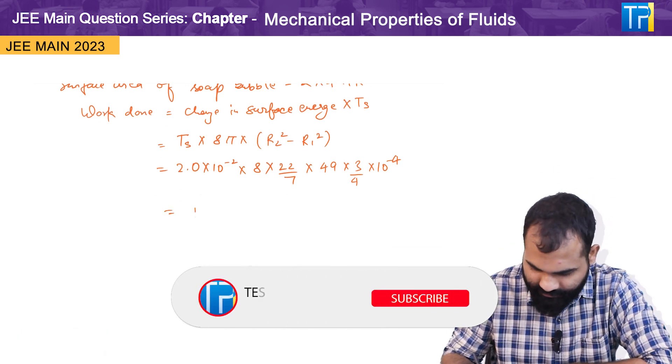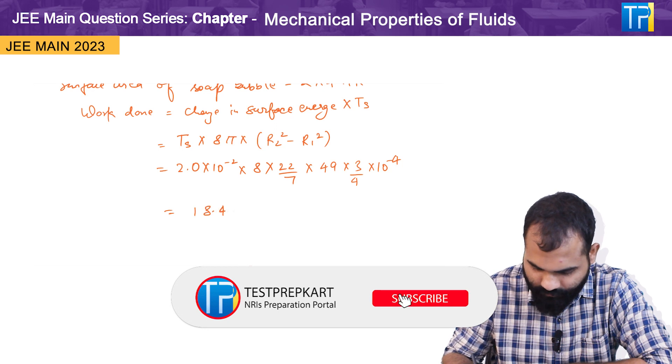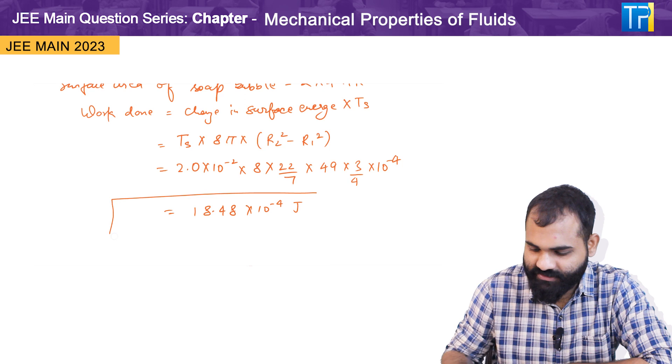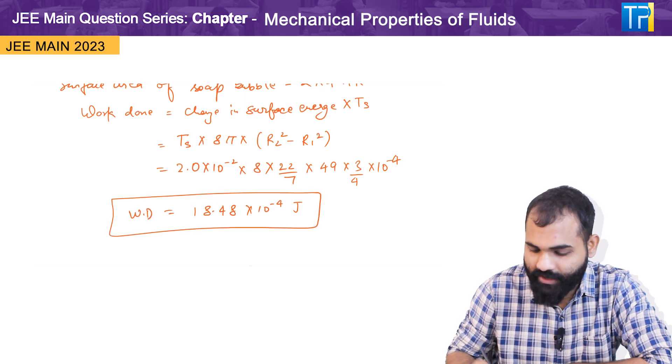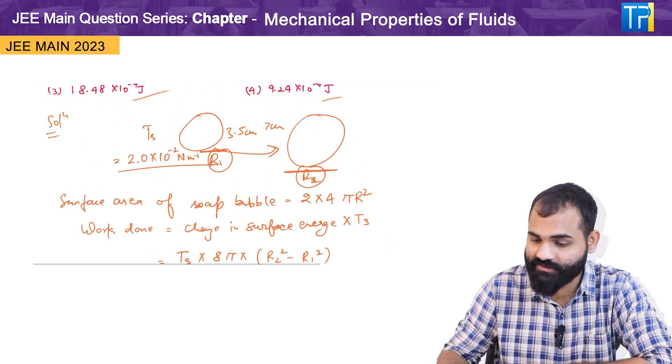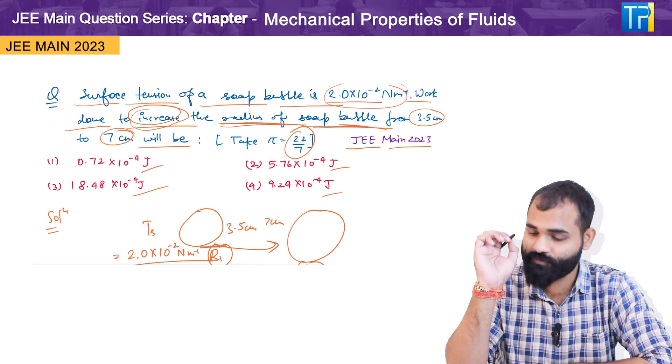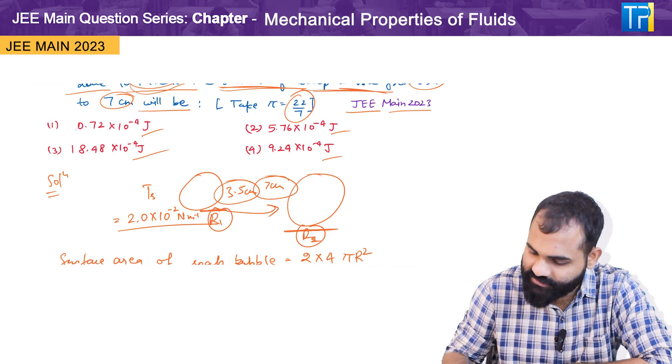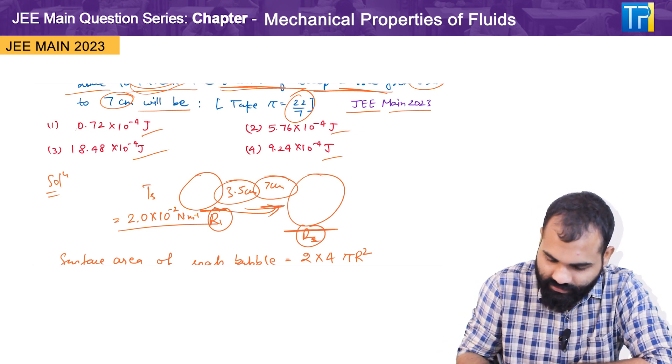After solving this, the value becomes 18.48 into 10 raised to power minus 4 joule. So basically this is the value of work done to increase the radius of soap bubble from 3.5 centimeter to 7 centimeter.